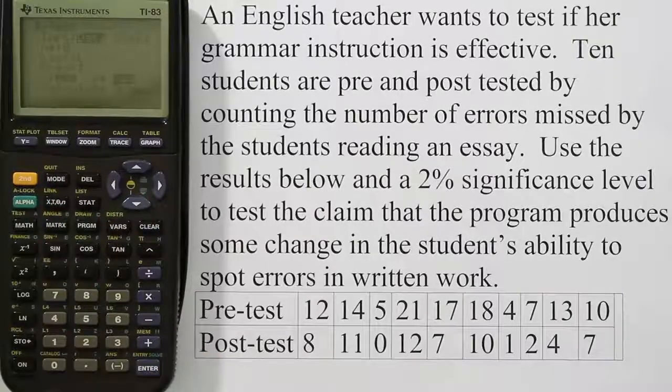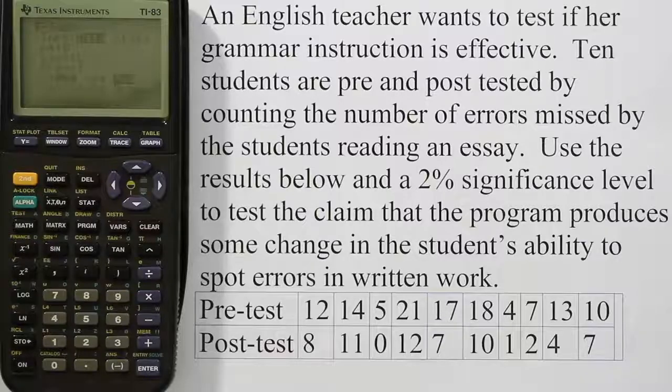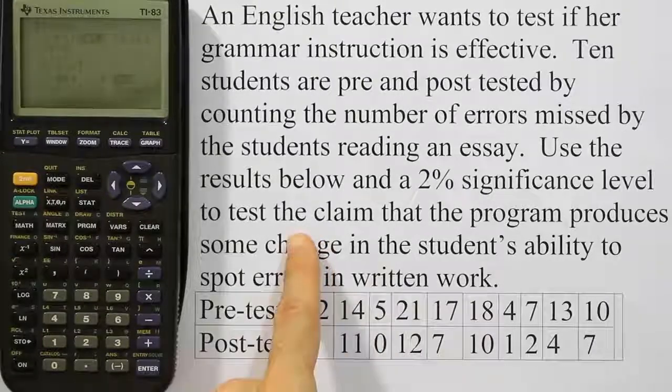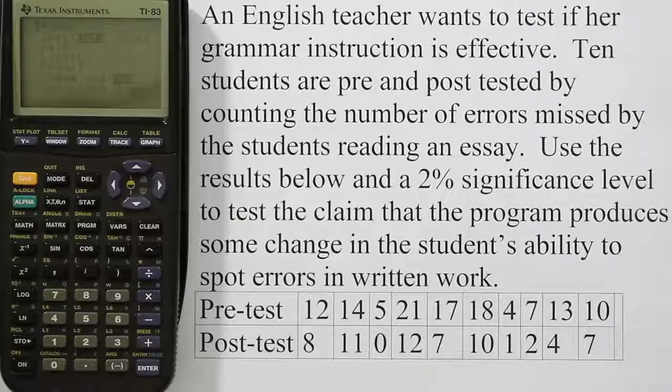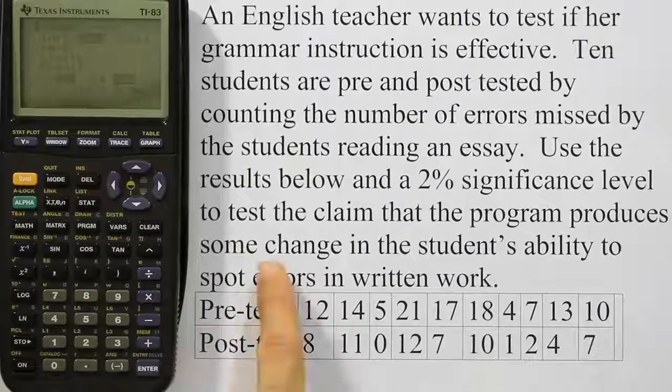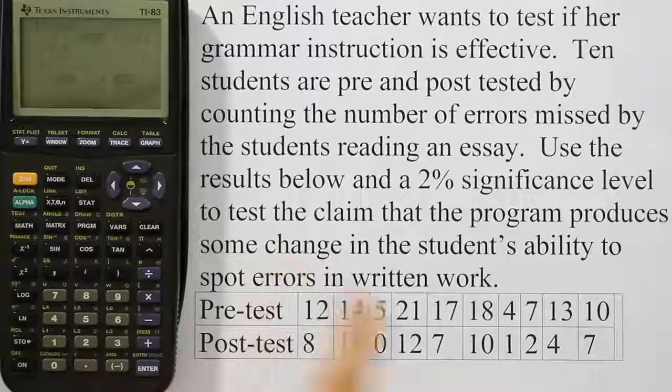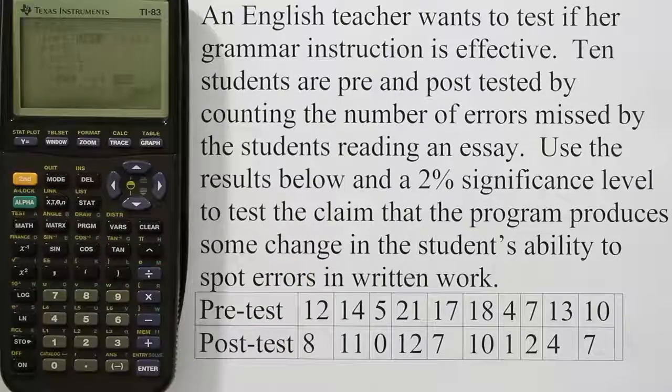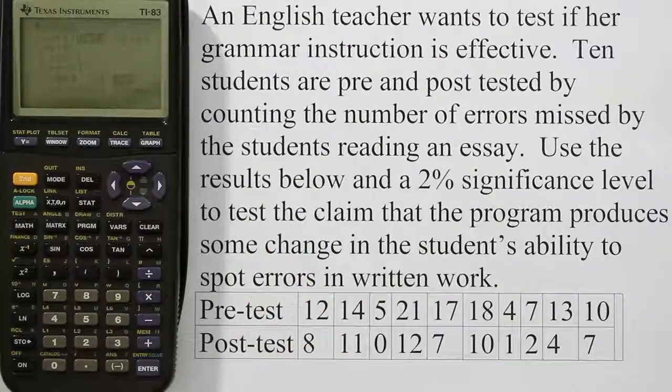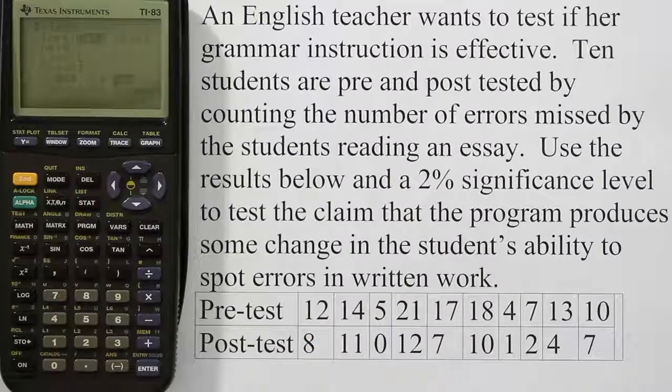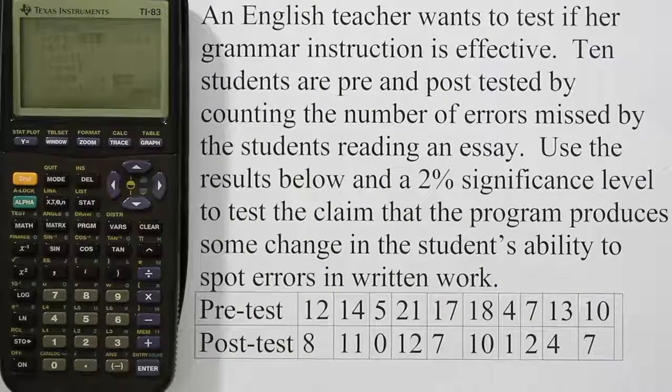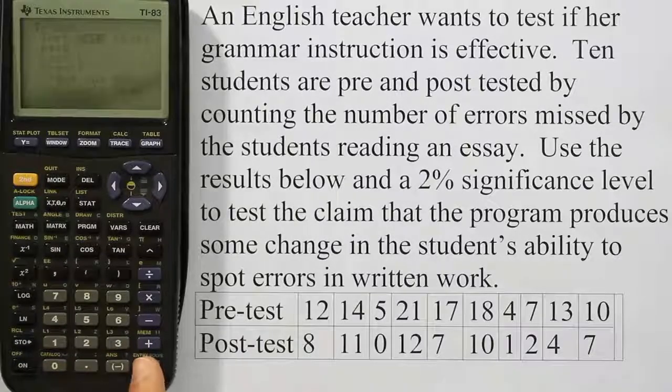Come over here and we have to enter in the symbol that you would find in your HA. Remember, the calculator doesn't do everything for us. We do have to come up with the H0 and the HA ourselves. When you read this problem, it says that we're going to test the claim that the program produces some change in a student's ability to spot errors. You may say, well, if her program is supposed to help, you would think that there would be less errors. But it doesn't say that in the claim. It just says test the claim that the program produces some change. So there's going to be some change. We don't know what kind of change. We don't know if it will be more errors or less. So when we say some change, we're just going to say that the amount of subtraction values here should not be zero. In other words, if it's zero, it means nothing changed. Their pretest score and their posttest score would be the same. So we're going to say that it's not equal to zero. So the difference should not equal zero. So I'm going to highlight not equal to and hit enter for that.